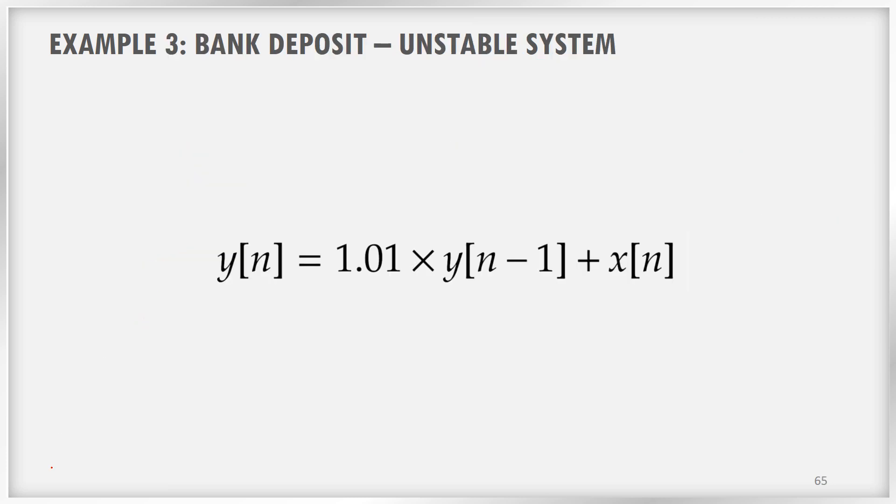Let us take another example of an unstable system. Here, we have considered depositing some amount in the bank. X of n at the beginning and let us take Y of n. So the Y of n is calculated as 1.01 into Y of n minus 1 plus X of n, right? And we have invested some thousand rupees in the beginning and we are not withdrawing any money from this account and there is no bank charges. Assume that ideal bank and there is no bank charges.